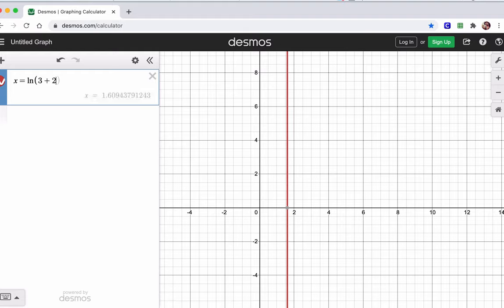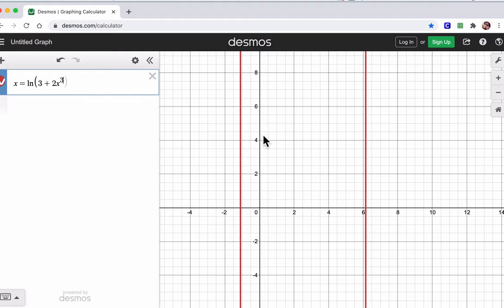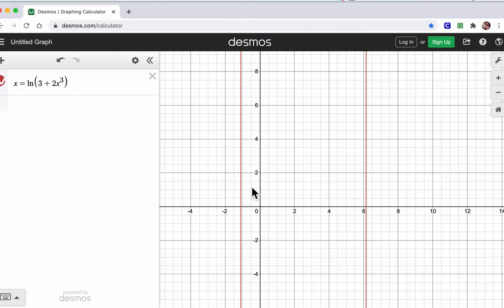Here, you get 3 plus 2x cubed. So you see these vertical lines, and these are potentially the answers that we're dealing with, about 6 and about negative 1 or so.